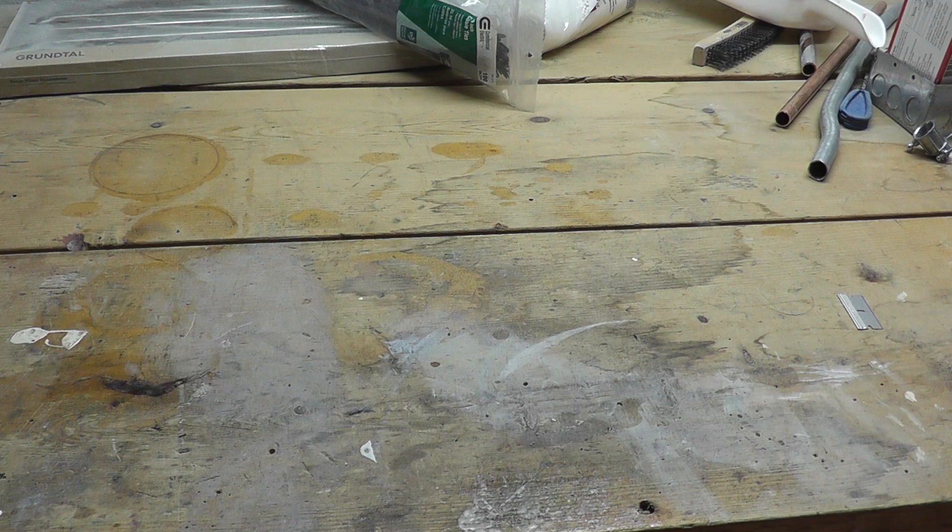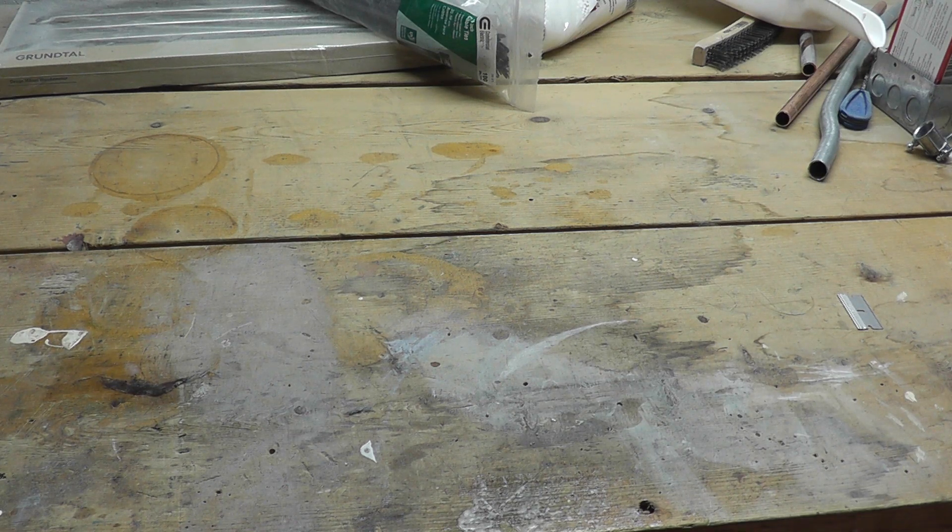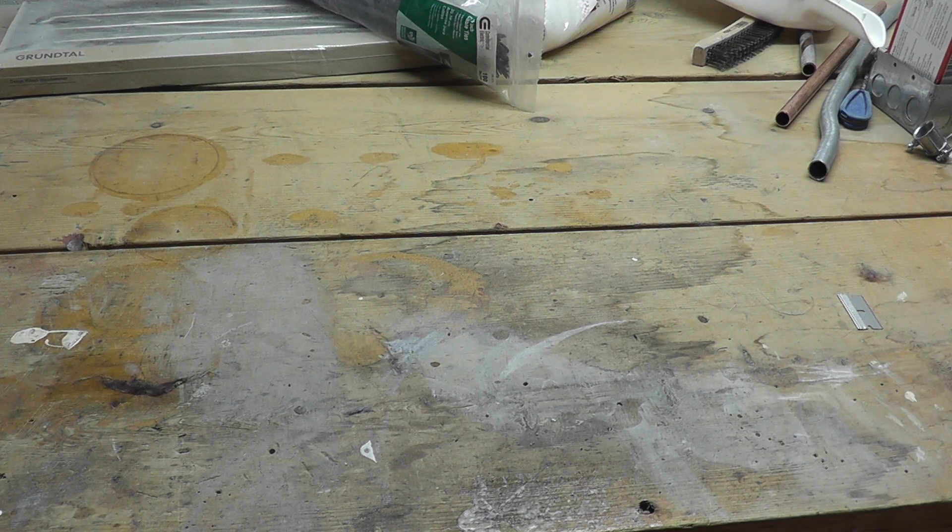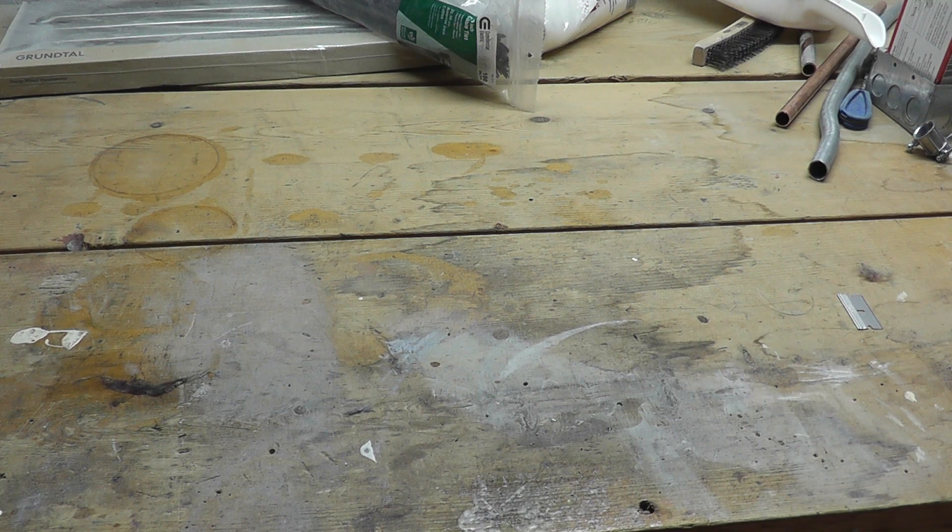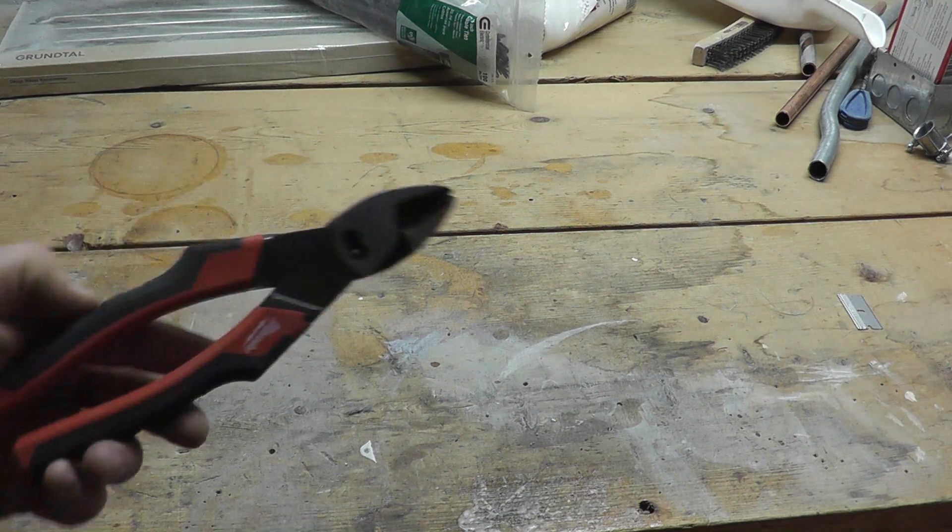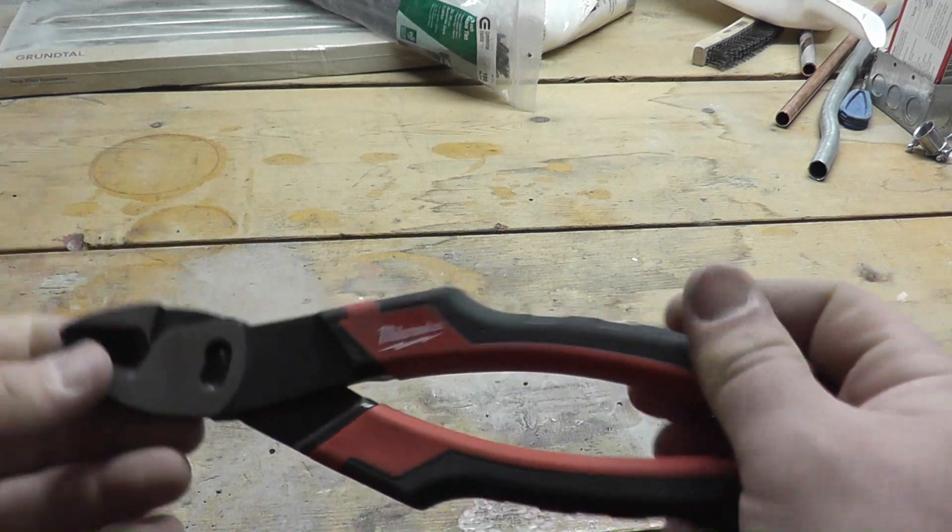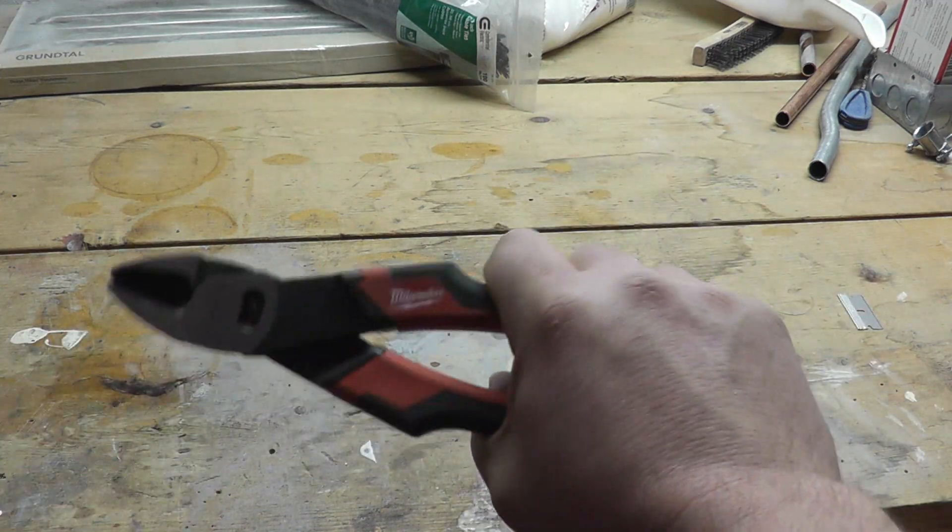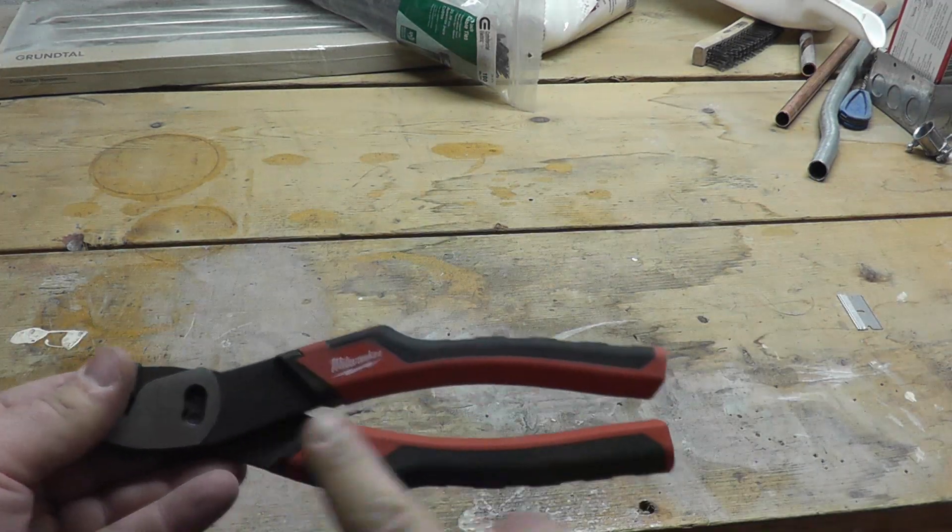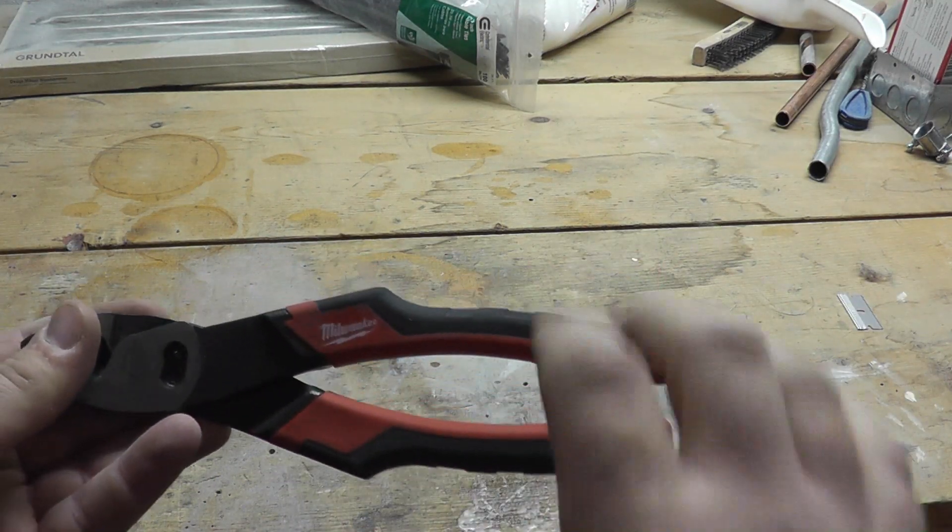I went to go pick up a pair of Klein dykes, but in the electrical section of - I believe it was Home Depot where I went - Milwaukee has a set of electrical tools and actually a whole set of tools now, not just electrical. They had the channel lock pliers and all kinds of different things. So I figured we'll give them a shot.